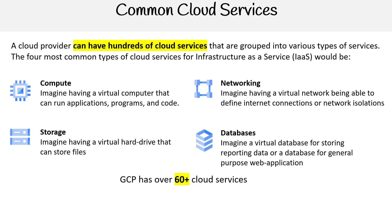For Google, they have 60 plus cloud services — fewer than the other providers. But for them, it's less about having a lot of services and more about having very high quality services. So it's by design. When you see that Azure has 200, it's a little bit too much. GCP is like, we're just going to make sure that these services are multipurpose — you don't have to have as many as the other ones.